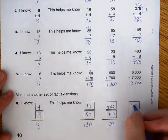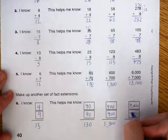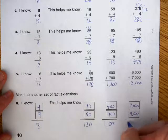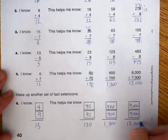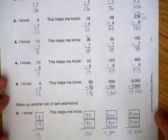And 4,000 plus 9,000 equals 13,000. So all of those will work that way.